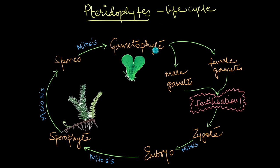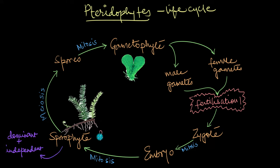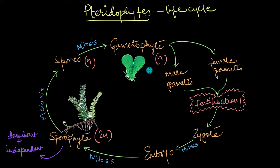This is not the case with more complex plants. In pteridophytes, the sporophyte is dominant and independent. The main plant you see — the one with the leaves, roots, and stems — belongs to the diploid sporophyte generation. When the sporophyte matures, it produces haploid spores via meiosis. Each spore then mitotically divides to give rise to a new haploid gametophyte, which is so tiny it is barely one centimeter in size. Despite its size, this gametophyte is also independent, just like the sporophyte.